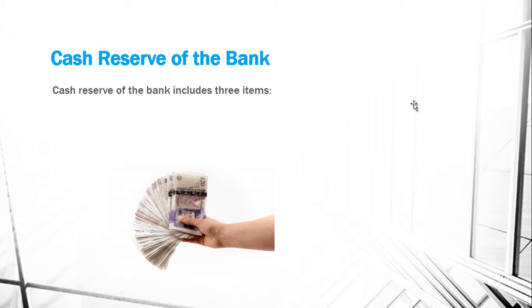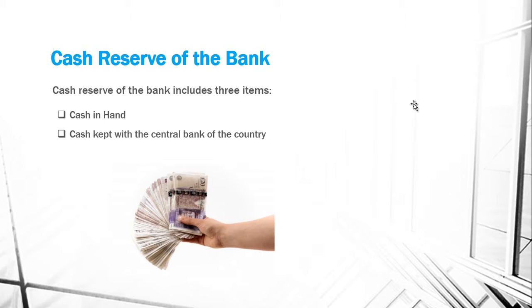Cash reserves of a bank includes three items: first is cash in hand, cash kept with the central bank of the country, and cash kept with other banks.